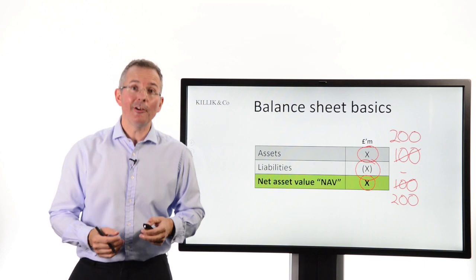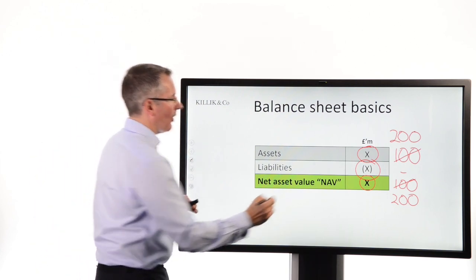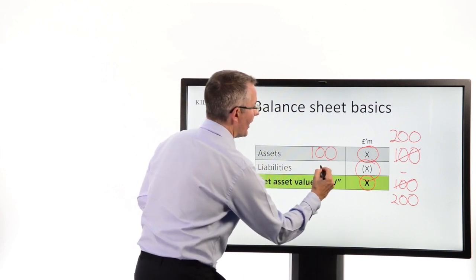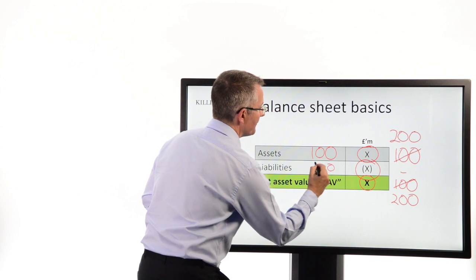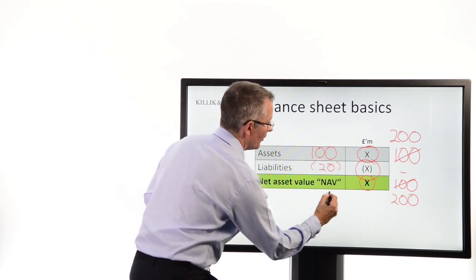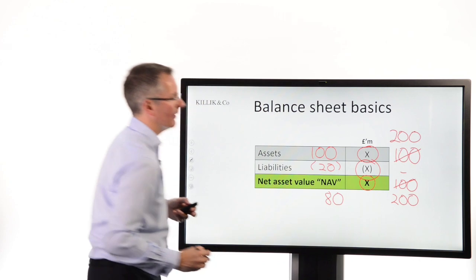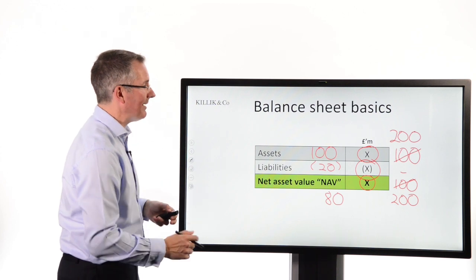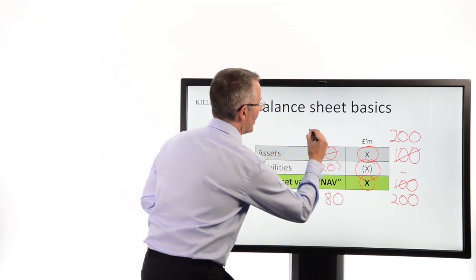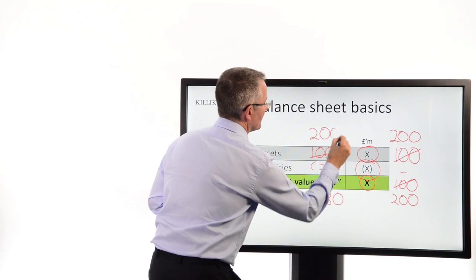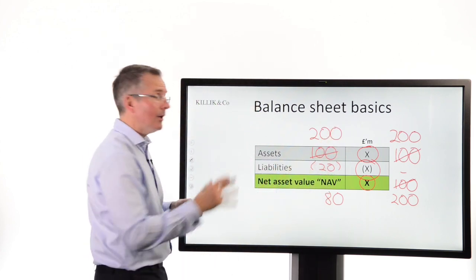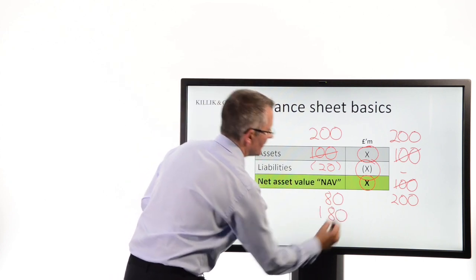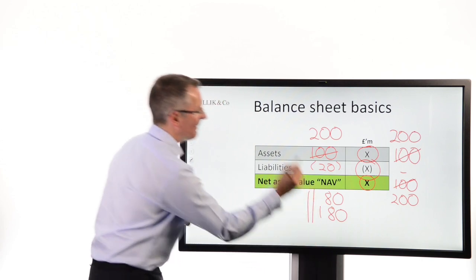Borrowing has the reverse effect on NAV. If a fund's got assets of 100 and borrowing of 20, then the NAV is the difference between the two, which is 80. And just worth noting: were the fund to double its assets to 200, still carrying debt of 20, then 200 minus 20 is 180 — which is more than doubling the NAV.